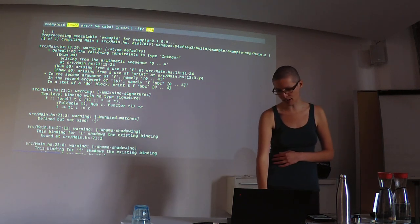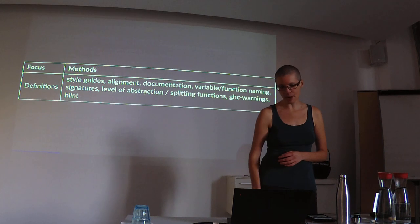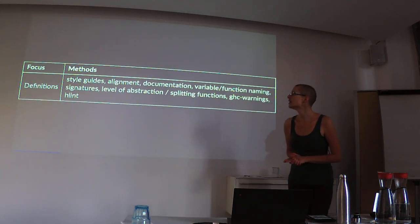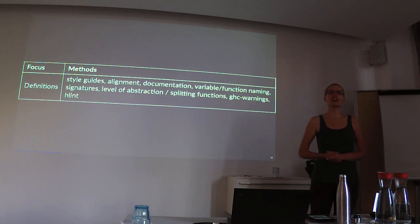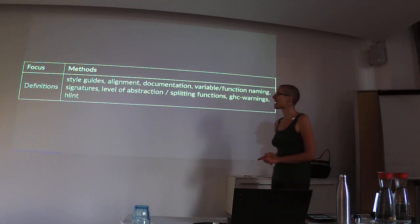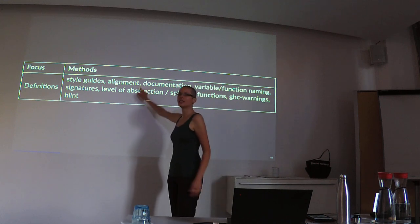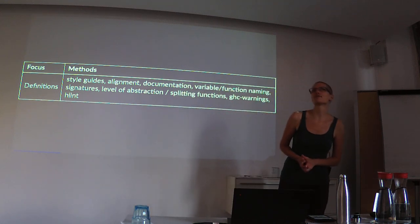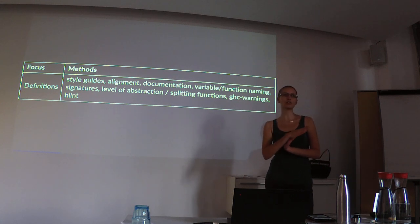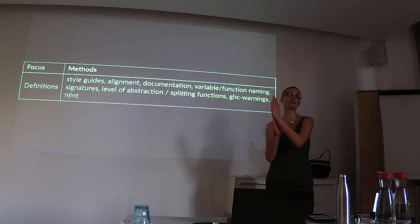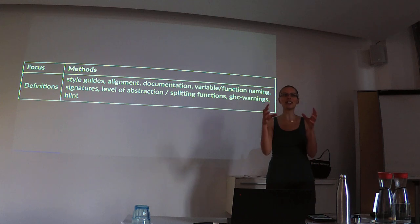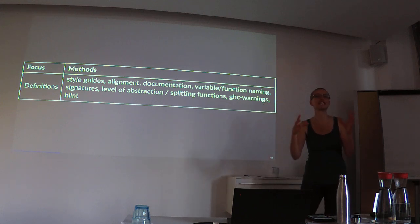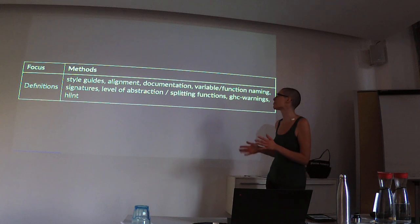So that's one thing at the function level. There are many other methods. Use a style guide — take one and stick to it. Align your code. Alignment is very important for us. For example, in Haskell do-notation, align the arrows at the same point. Sometimes when you do this, a bug just pops out and you see it right there. So alignment is very important for us.